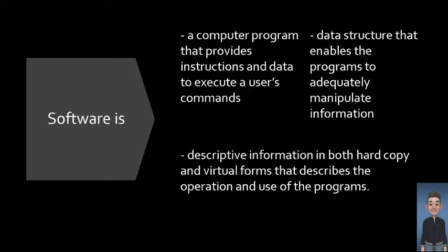Software bears different meanings for different types of people. First, software is a computer program that provides instructions and data to execute a user's commands. Second, software is descriptive information in both hard copy and virtual forms that describes the operation and use of the programs. Third, software is a data structure that enables programs to adequately manipulate information. While all of these are true, some definitions are more relevant to you as a future software engineer.